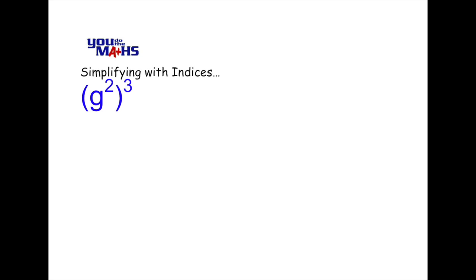So in the first case we have g squared all to the power 3. That means that everything in the bracket gets multiplied out by itself three times. So in this case g squared is in the bracket and that gets multiplied out three times.